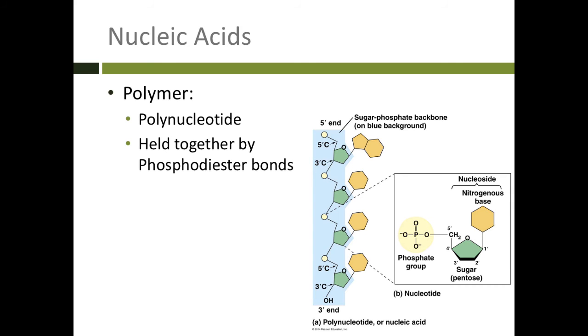When you string all of those nucleotides together, you get something called a polynucleotide. So again, this is a polymer. It is a long chain of repeating monomers. These are held together by phosphodiester bonds, which we will get into later.